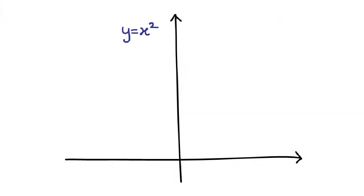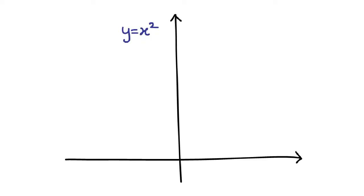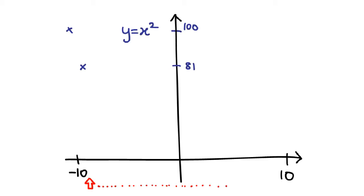So what happens when we try to plot a graph? Essentially we have a running variable and a reacting variable — these aren't official math terms, but just go with it. Let's say I wanted to plot the graph from negative 10 to positive 10. What's gonna happen is I'm gonna set x to be negative 10 first, put it through the equation and get the value of y. Then I increase x to negative 9 and again get the value of y. So x is the running variable, running from negative 10 to positive 10, and y is the reacting variable, reacting to the changes in x.